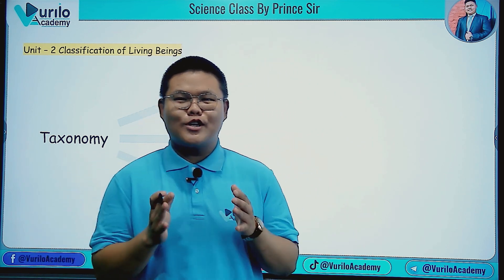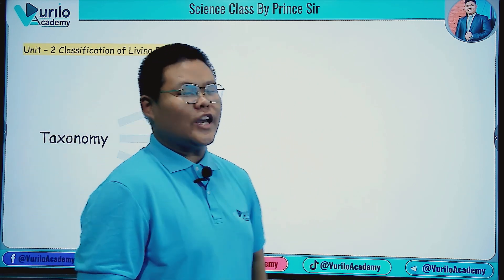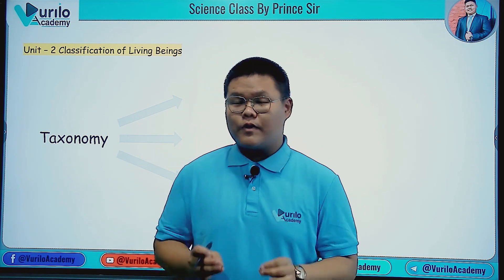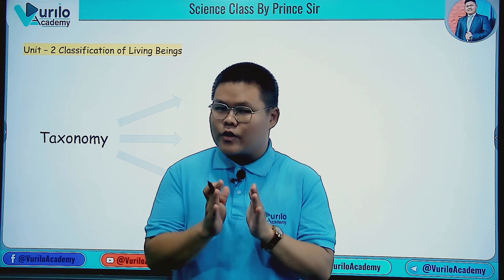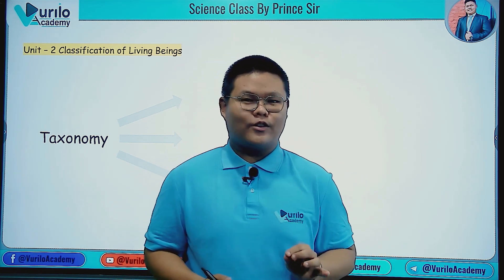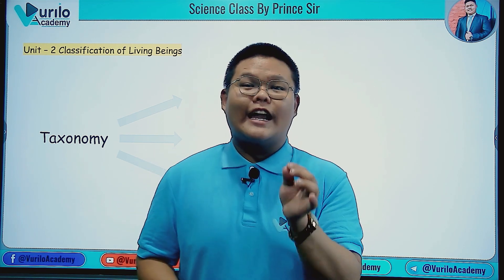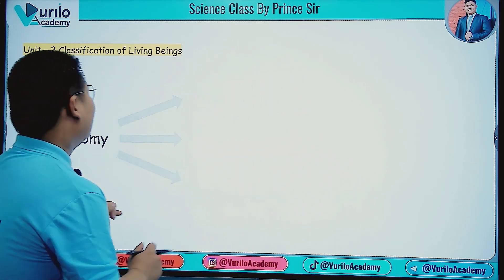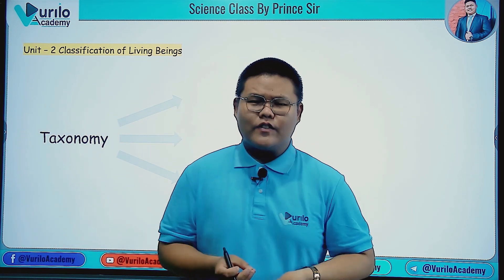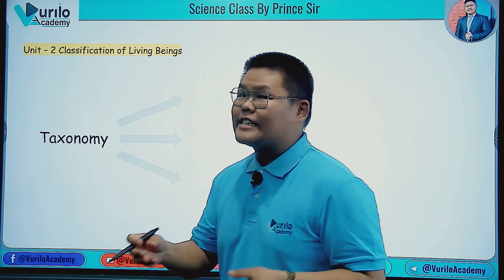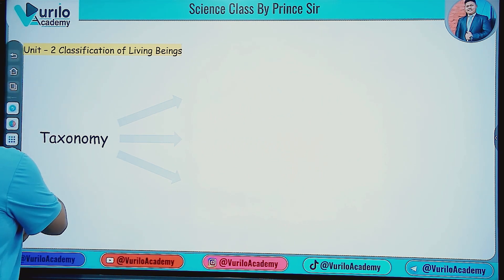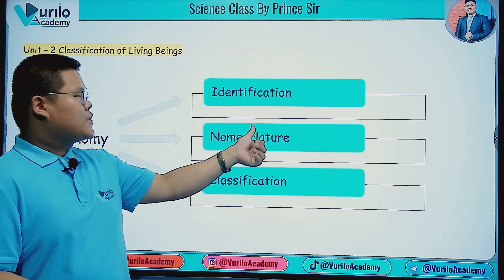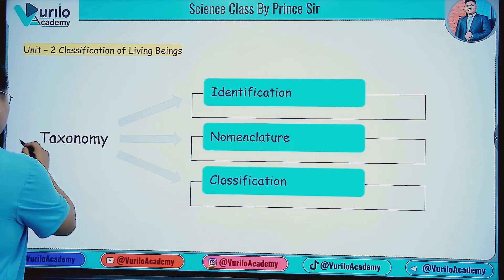Welcome to Vrila Academy. Today we are covering the classification of living beings. Classification, generally, is called taxonomy. Taxonomy has three aspects: identification, nomenclature, and classification. It is very important to remember how to define taxonomy.